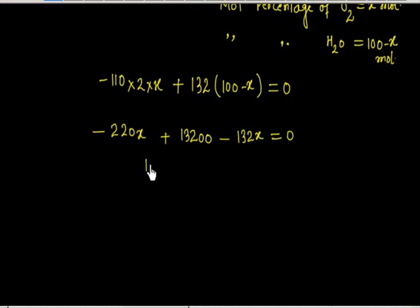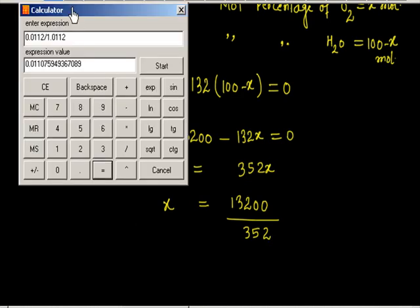So we can solve for X. 13200 equals 352X. So X is 13200 divided by 352.